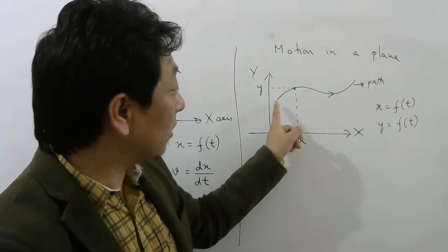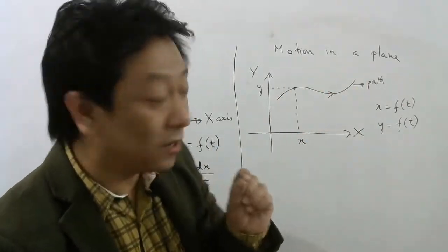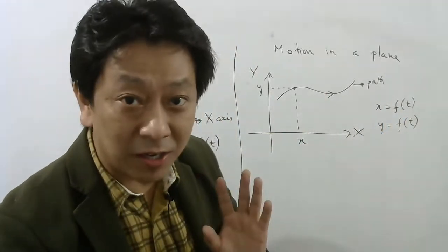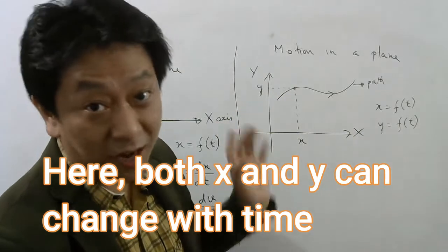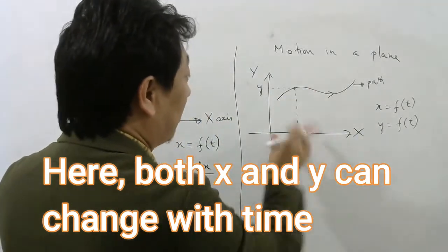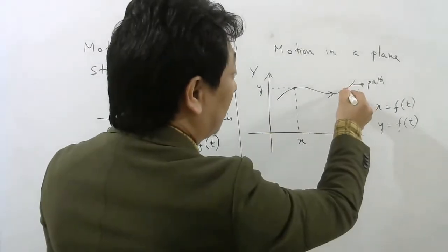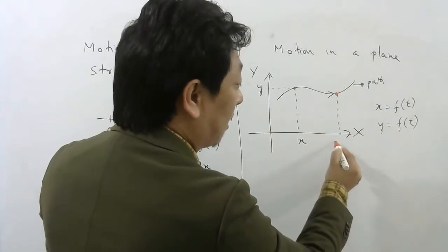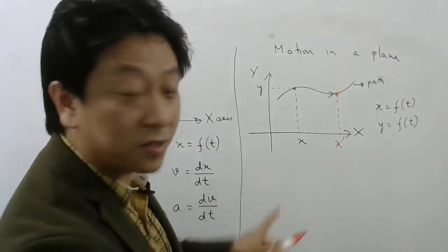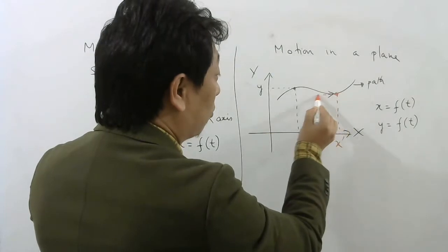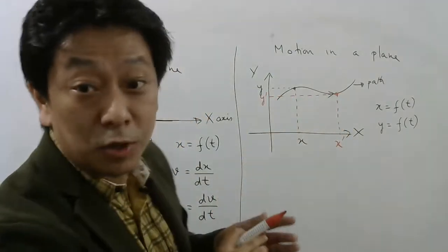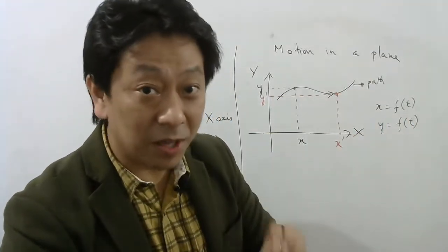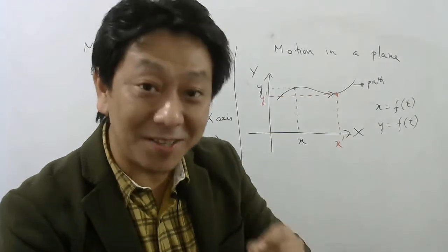However, when our particle is moving in an x-y plane, its x-coordinate will also be a function of time, meaning x-coordinate can change as well as y-coordinate can change. So when the particle is here, this is the x-coordinate and this is the y-coordinate. When the particle reaches another position, both the x and y coordinates are different. So when a body moves in a plane, both x and y are functions of time — both x and y change with time.